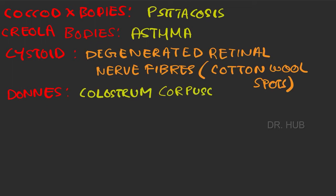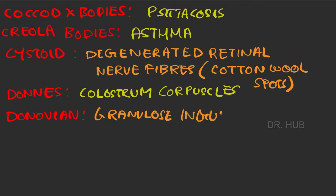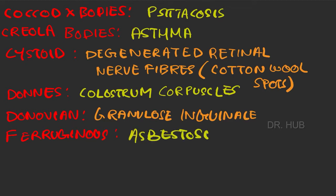Cytoid bodies in degenerative retinal nerve fibers, that is cotton wool spots. Then Döhle bodies seen in colostrum corpuscles. Donovan bodies in granulosis inguinale. Ferruginous bodies in asbestosis.